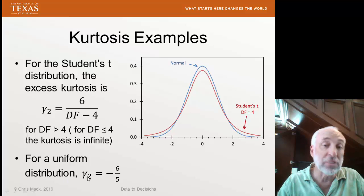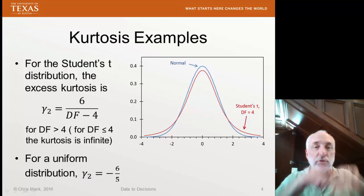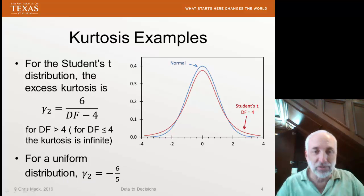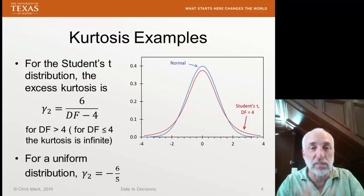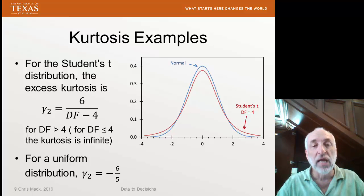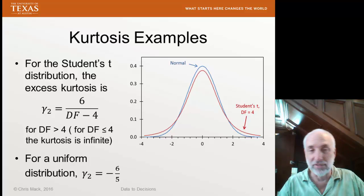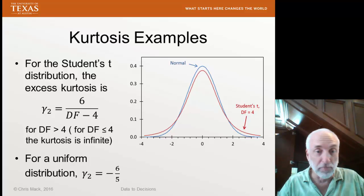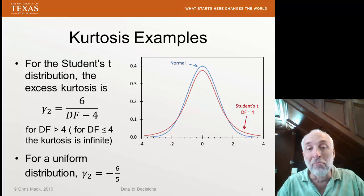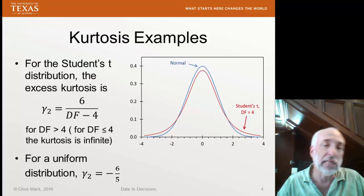For a uniform distribution, gamma 2 is negative. Well, a uniform distribution is flat, comes straight down at the two endpoints, the min and the max values. And then, well, there's no tails. The tail is very light because there is no tail. And gamma 2 is minus 6 fifths, so close to minus 1.